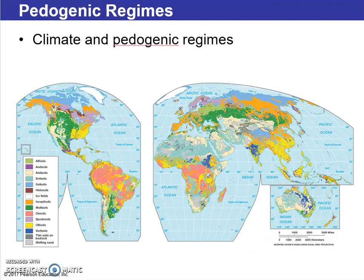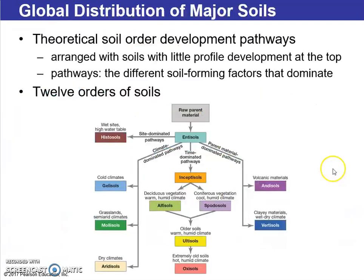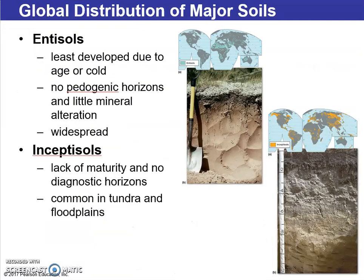We can see these regimes established on a global map. On the interior we see oxisols, while certain regime types occur on the coast and interior, and further north they are heavily influenced by location. This shows theoretical pathways for the 12 soil orders. The type of soil is generally influenced by where it exists in the world — for instance, gelisols are least developed due to age, cold conditions, and septic conditions.